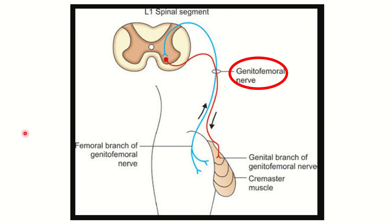The cremasteric reflex involves two important components: the femoral branch of the genitofemoral nerve, which is sensory, and the genital branch of the genitofemoral nerve, which is motor. Together these two branches form the genitofemoral nerve. For a complete reflex, both sensory and motor components are required.